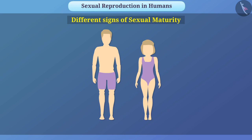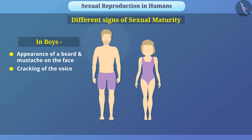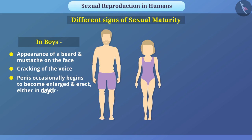During this period, there are some changes which are different in boys and girls. In boys, there is appearance of a beard and moustache on the face, cracking of the voice, and the penis occasionally begins to become enlarged and erect either in daydreams or at night.